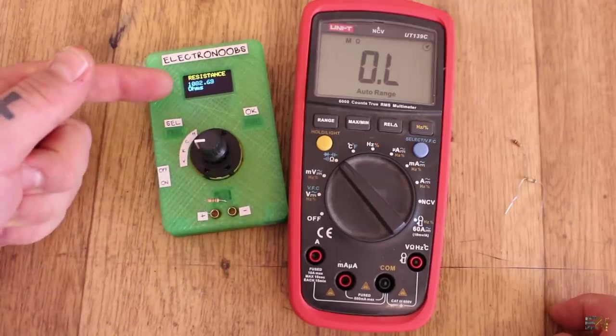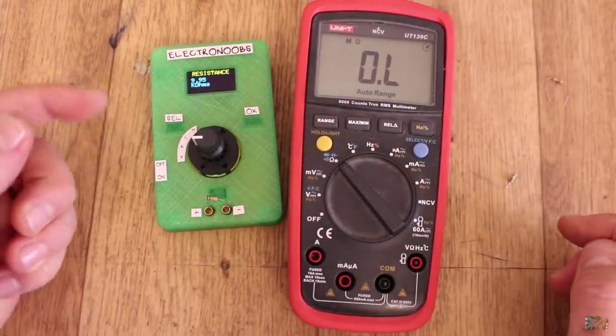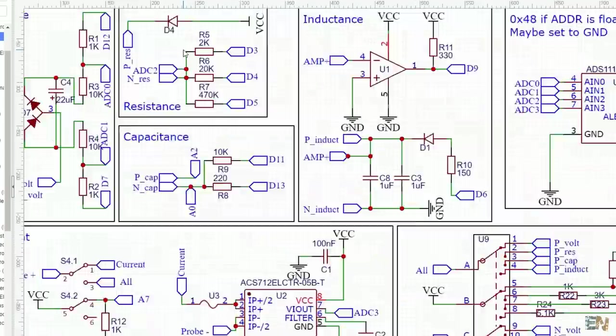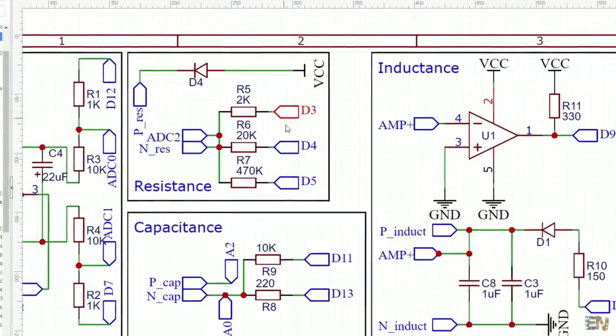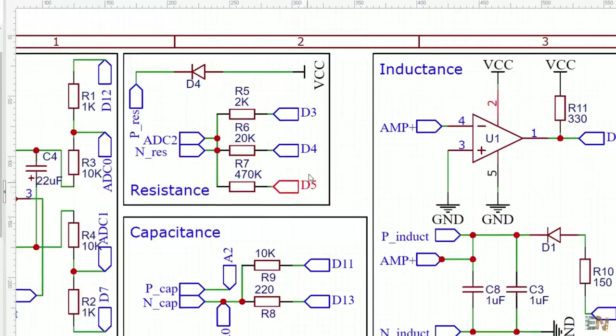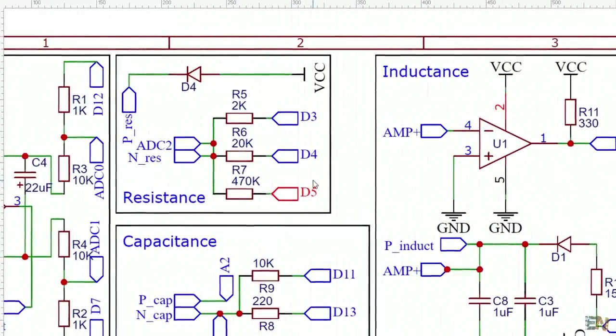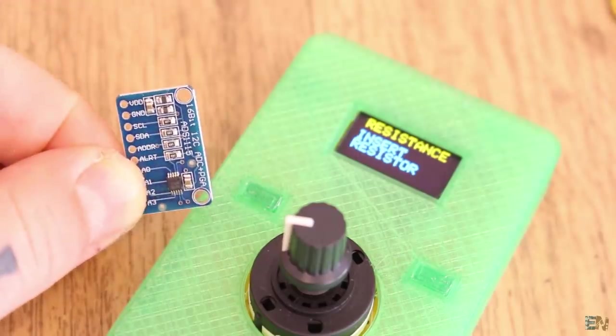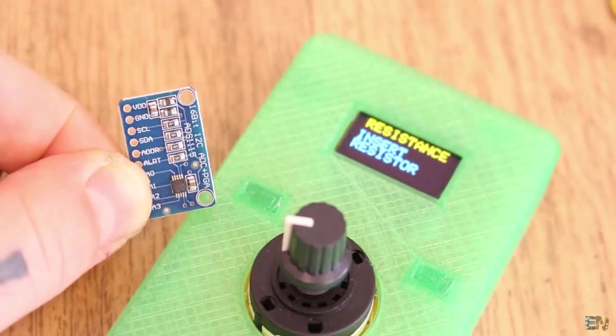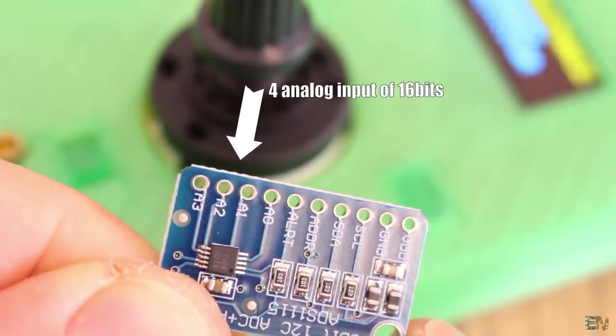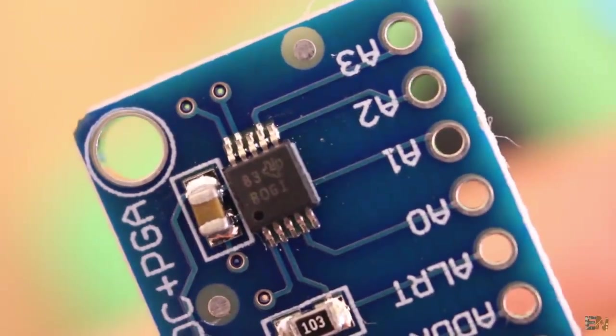As you can see, I first measure a 1K resistor. Now I measure a 10K resistor and the range automatically changed. That is made with this schematic and as you can see, by changing digital pins D3, D4 or D5 to ground, we can create different voltage dividers and by that we can change the scale. The voltage measurement for this divider is also made with the ADS1115 because it has 4 different inputs, so we still have the 16 bits ADC for the resistance mode.